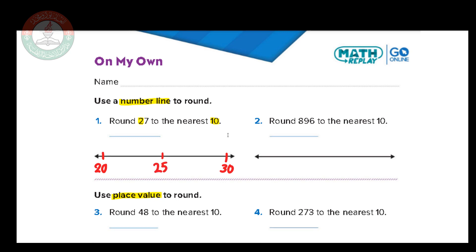Now ask yourself: where is 27 on the number line? The 27 is after the 25, so it sits closer to the right side. The 27 is clearly closer to 30, so we round 27 to 30.